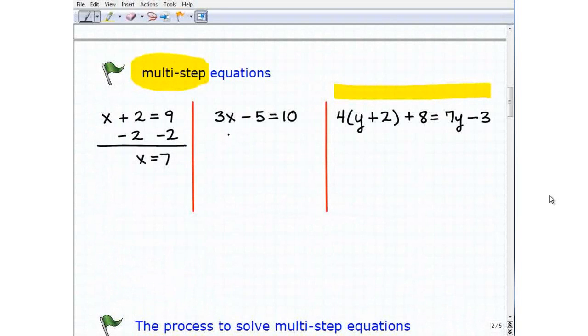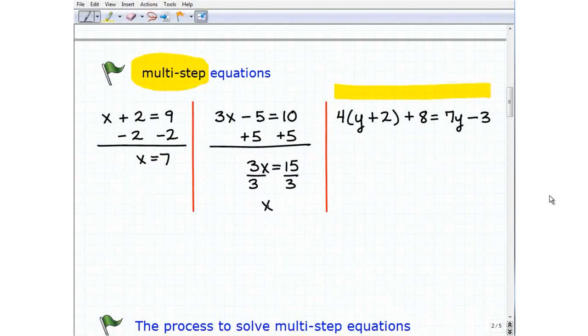Now the next one is a two-step equation. The first thing I'm going to do is add 5 to both sides. Then I'm going to go ahead and add down. I'm going to get 3x equals 15. And then my second step is I'm going to divide both sides of the equation by 3. And then I'm going to get x equals 5.